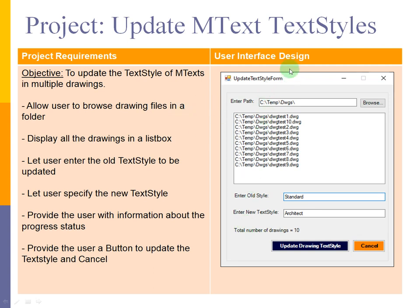This is our user interface design that reflects all of these requirements. We have a text box that will store the folder selected by the user, and we also provide a default value if you have a folder where all your drawings are stored. This is the list box that displays all of the drawings from the selected folder. This text box allows us to specify the style that needs to be replaced, and this is the new style that will replace the old style.